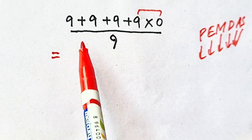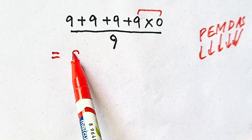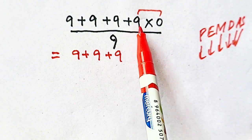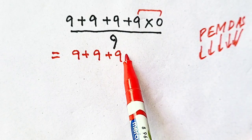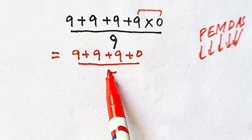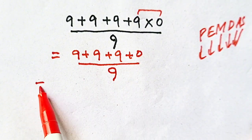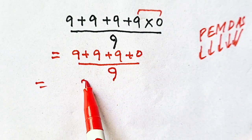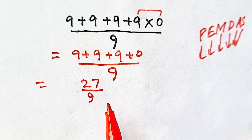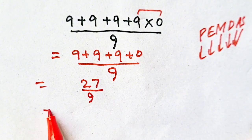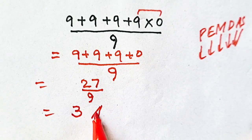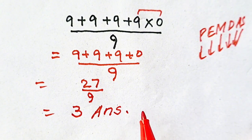So we will get 9 plus 9 plus 9 plus 0 — since 9 times 0 is 0 — and 9 plus 9 plus 9 is 27, divided by 9. So 27 divided by 9 is equal to 3, which will be our answer. Thank you for watching.